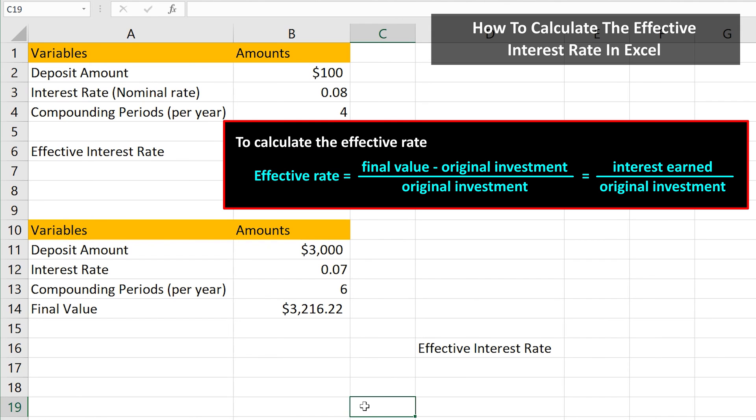When you know the final value of the investment, the formula to calculate the effective rate is effective rate equals the final value minus the original investment, which is the total interest earned, divided by the original investment. I have this in cell E16 on the screen.